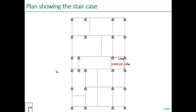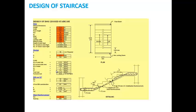This is the plan showing the location of the staircase, which is 3.24 meters by 2.1 meters. The staircase is designed using the MS Excel sheet, providing the length and width of the staircase, providing the FCK and FY values, riser and tread of the staircase. The staircase is designed for the limit state design, and the reinforcement details are specified. Center-to-center distance of the reinforcement is obtained.